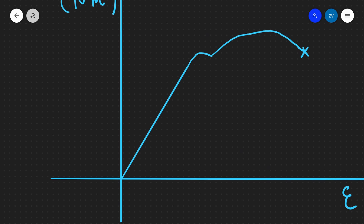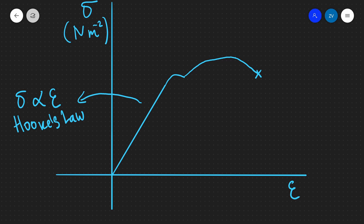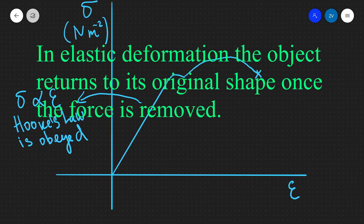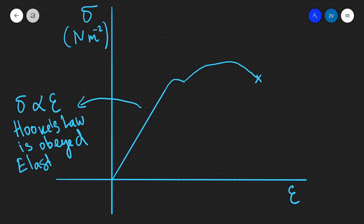In the very first region of the graph, the graph is initially a straight line through the origin. This means stress is proportional to strain, and therefore the applied force is proportional to the extension — in other words, Hooke's law is obeyed. This is the region of elastic deformation: if you apply a stretch and then remove the force, the material returns to its original shape, just like a spring.